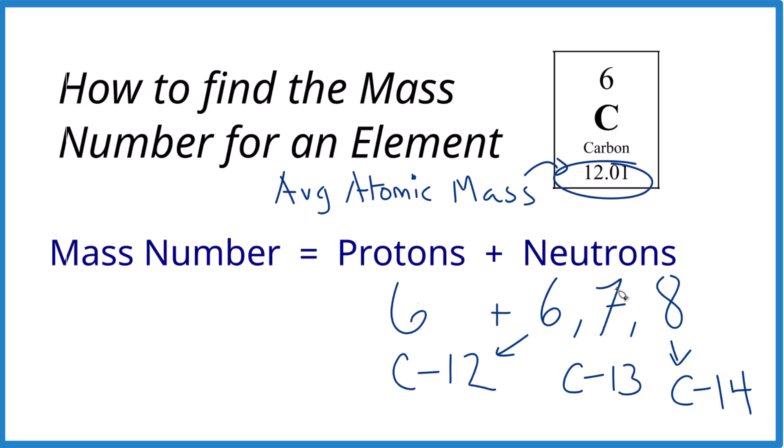But when we average these all out, we end up with this 12.01. It's based on the abundance of each one. But this number is an average of the isotopes, and that's why it's not a whole number like we found with mass number when we add protons plus neutrons.